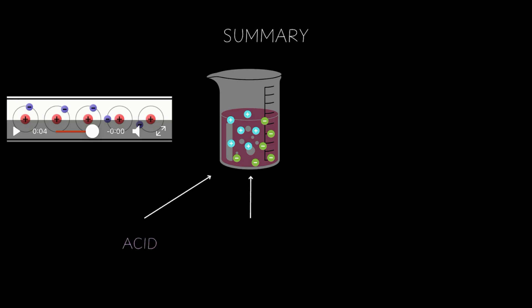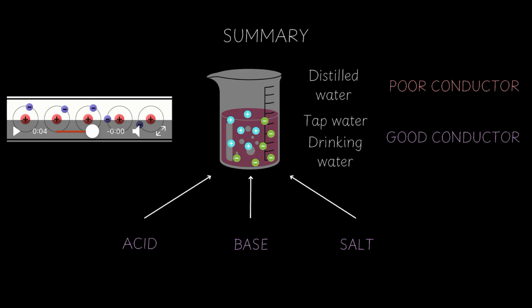And where do these ions come from? They come from acids, bases, or salts. Pure liquids without ions like distilled water, oil, and alcohol are poor conductors. Whereas tap water, mineral water, lemon juice, and vinegar are good conductors of electricity.